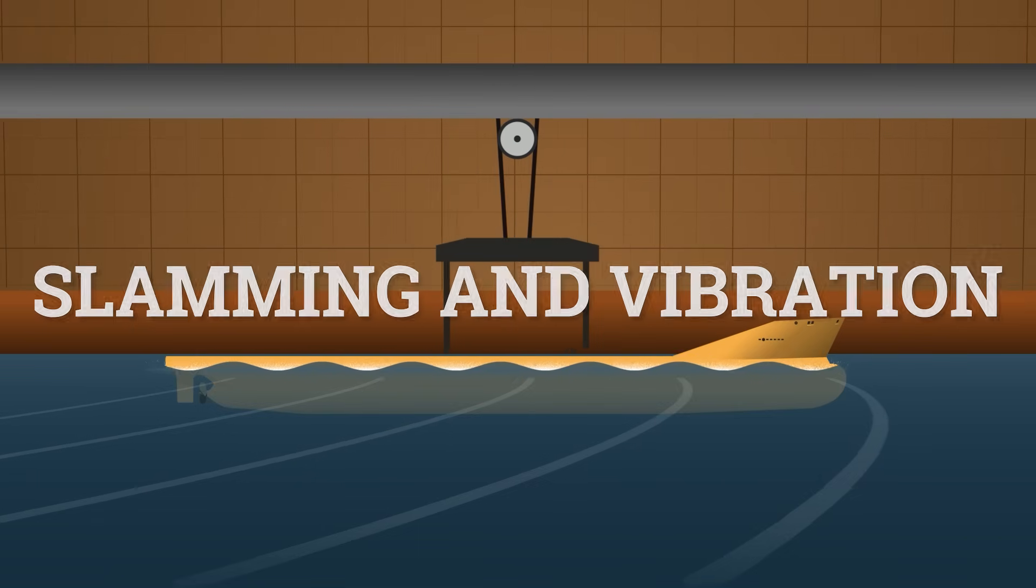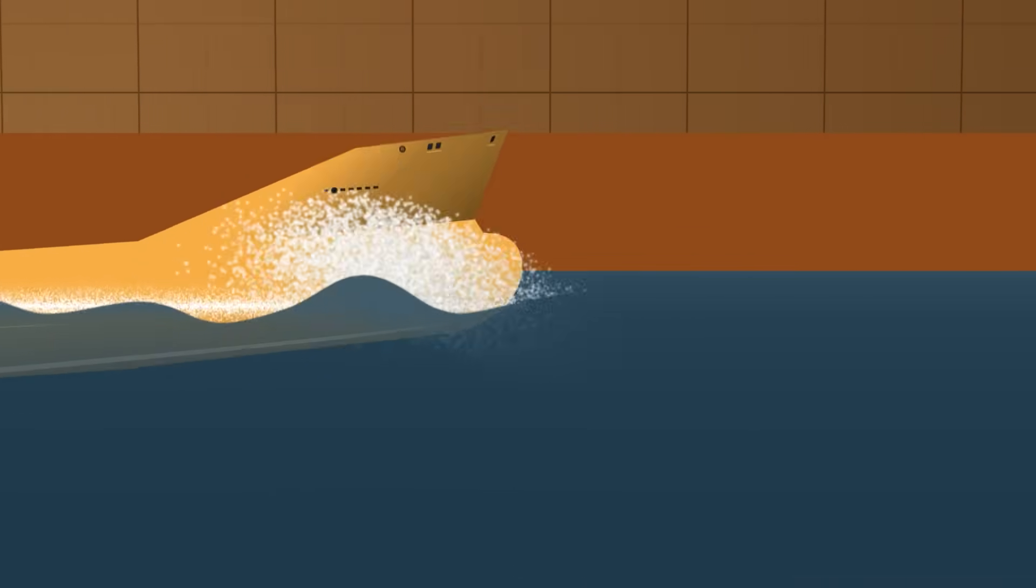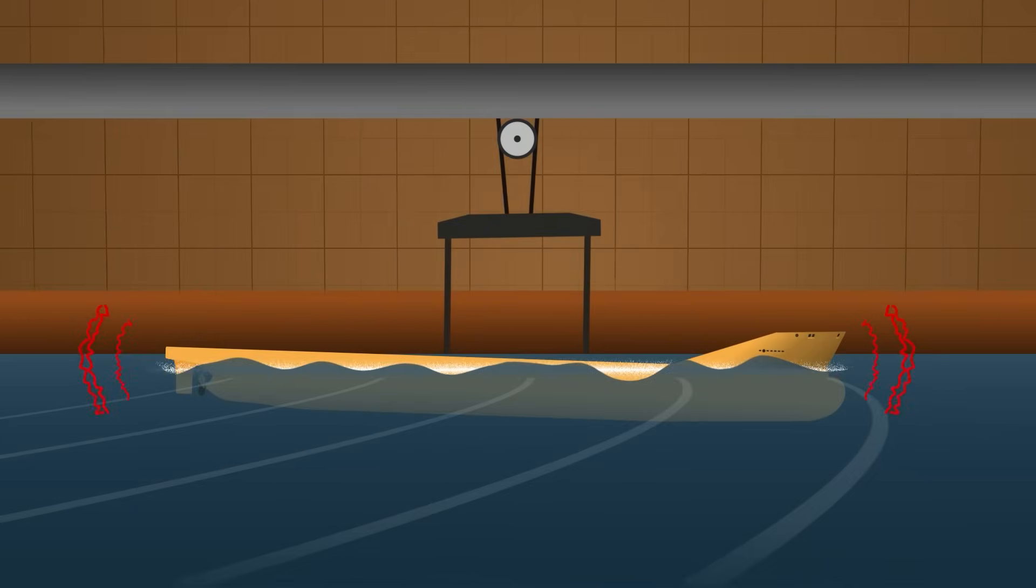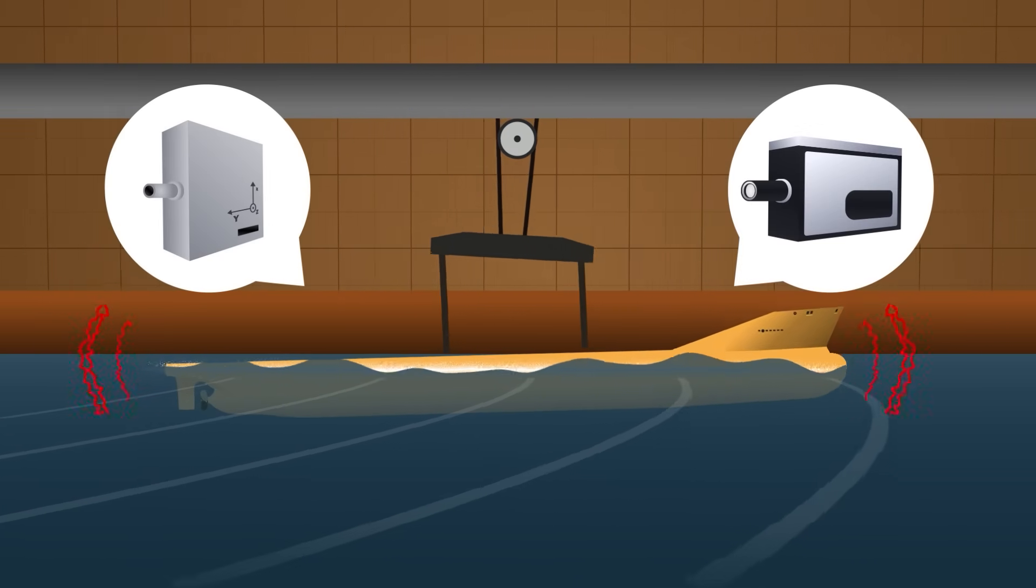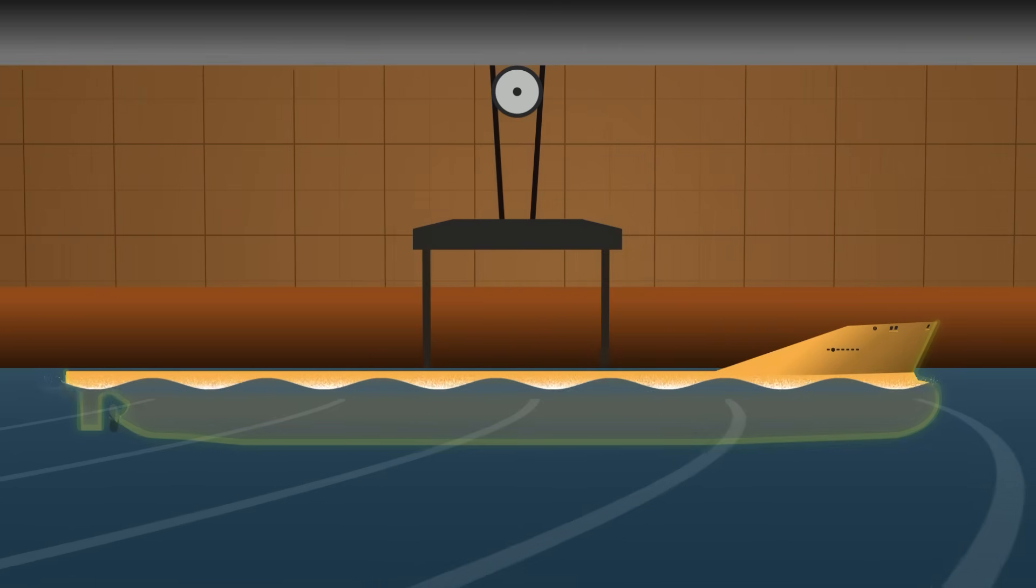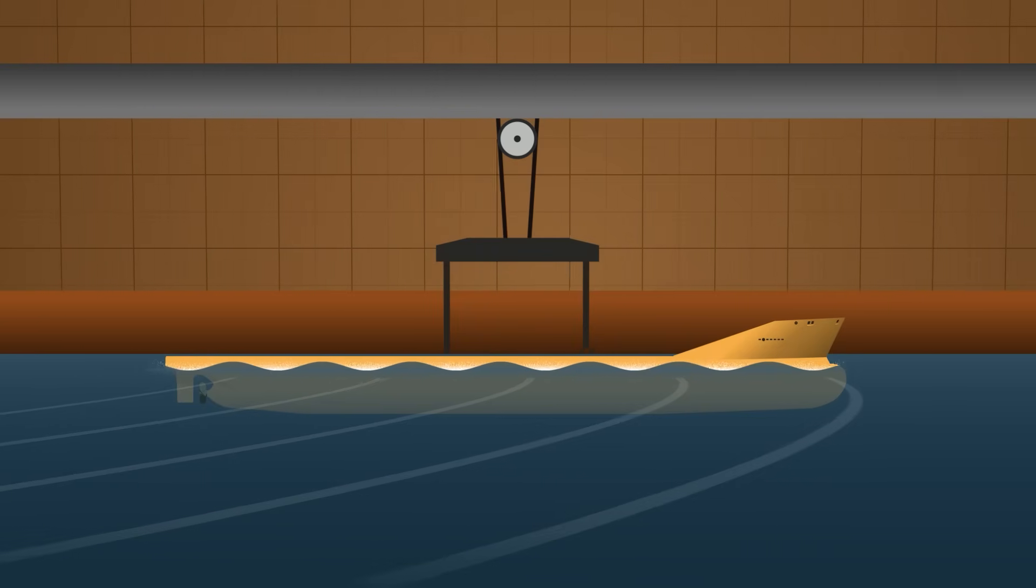Slamming and vibration. Certain hulls, especially those with narrow, sharply angled bow shapes, can strike the surface hard. Each impact sends a shock through the structure. Accelerometers and high speed cameras record these moments, frame by frame, so engineers can adjust framing, thickness, and load paths before any real stress ever meets steel.